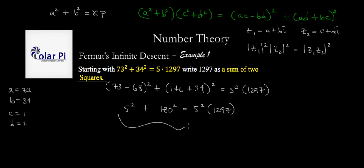And it's pretty clear what we're going to do next. We're going to divide both sides of this equation by 5 squared. And when we do, we'll have 5 squared divided by 5 squared plus 180 squared divided by 5 squared equals 5 squared times 1297.